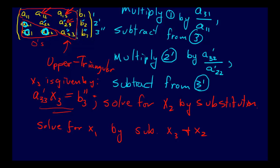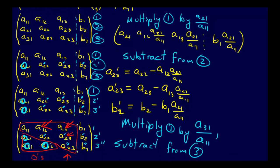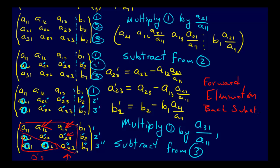Just to recap: this first step of zeroing out all the entries below the diagonal is called forward elimination, and going through and substituting back in is called back substitution. So we have two steps: the forward elimination step and the back substitution step.